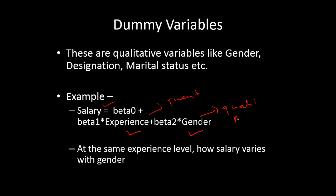Gender is male or female. We want to know how being male or female affects somebody's salary. The purpose of having a categorical variable like gender in the model is to know how, at the same experience level, salary varies with gender — whether it is more, and if so, by how much. That's the objective of using a dummy variable in a regression model.